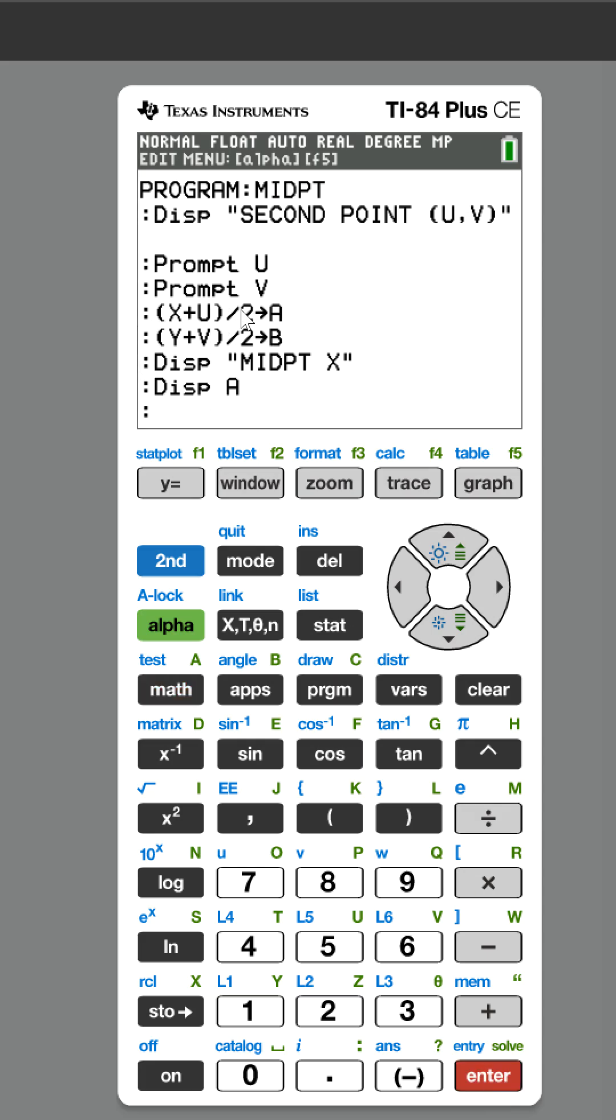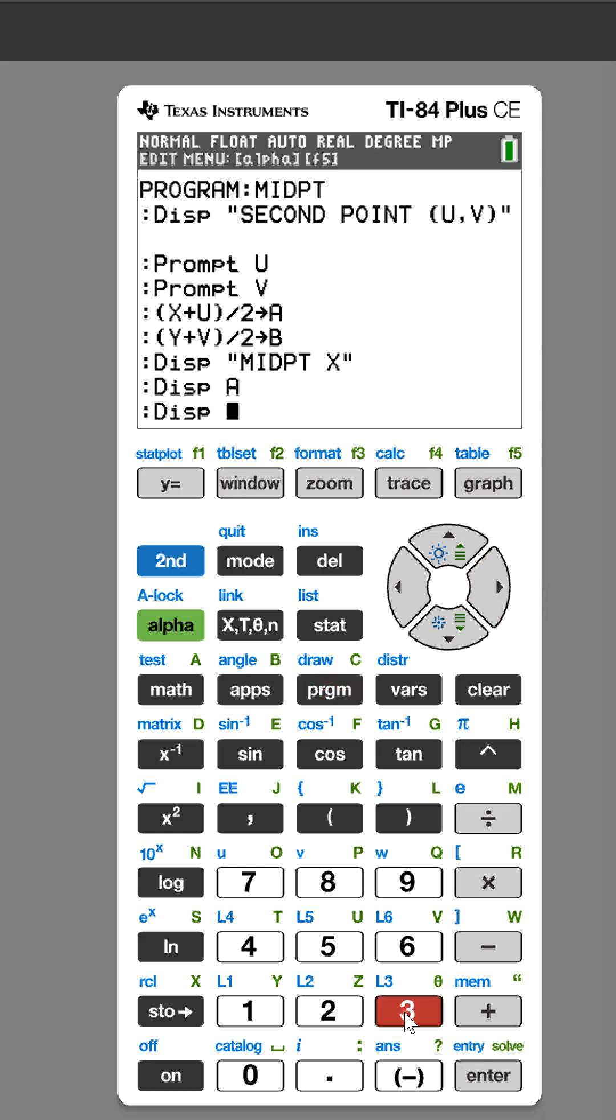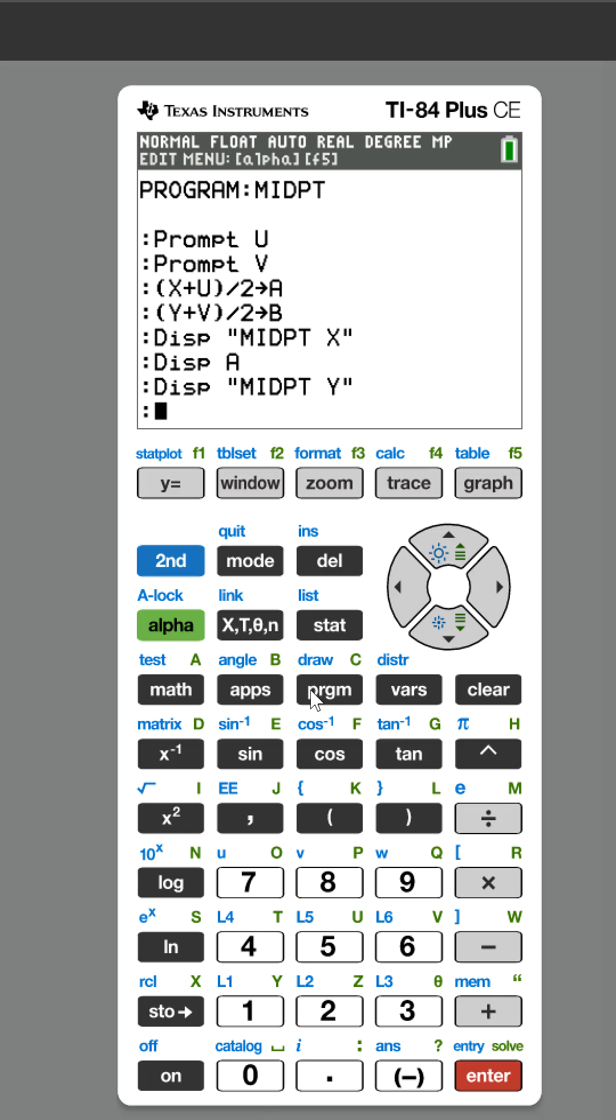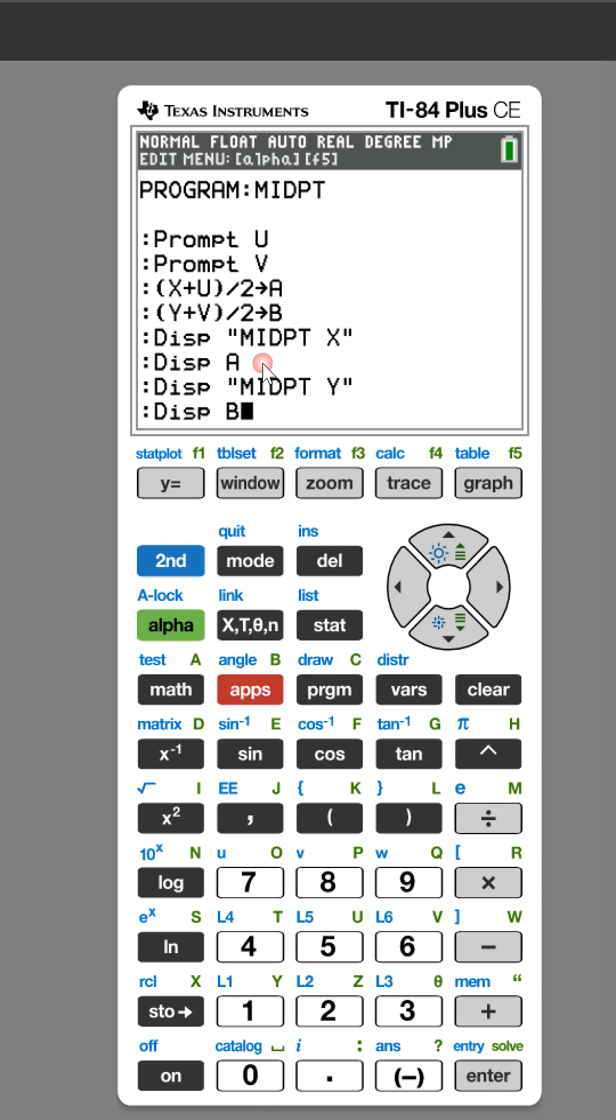Now we're gonna display midpoint Y, so M-I-D-P-T space Y and quotation marks. Now we're gonna display B because that's what we assigned the Y coordinate to.